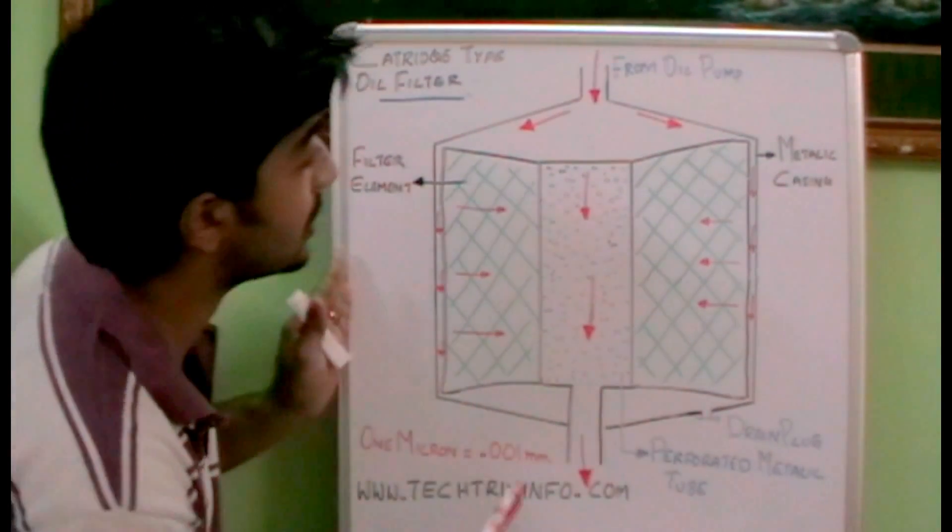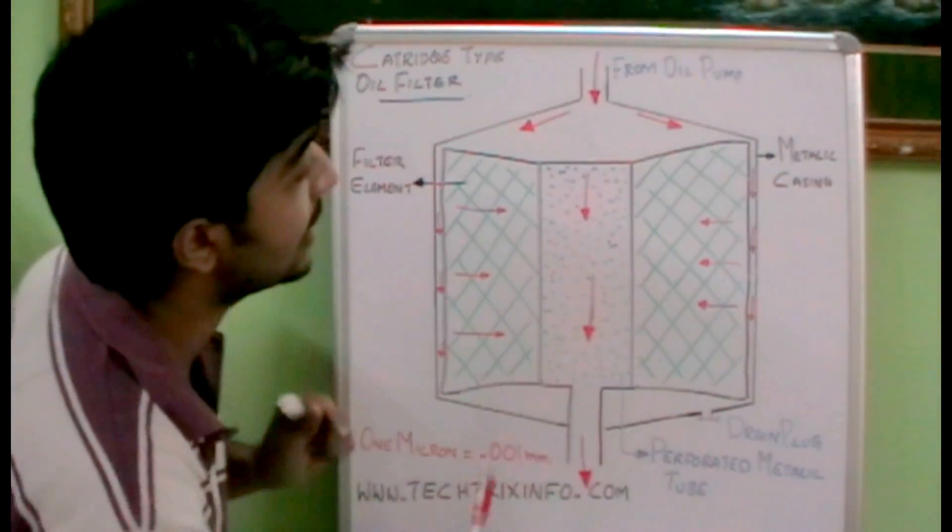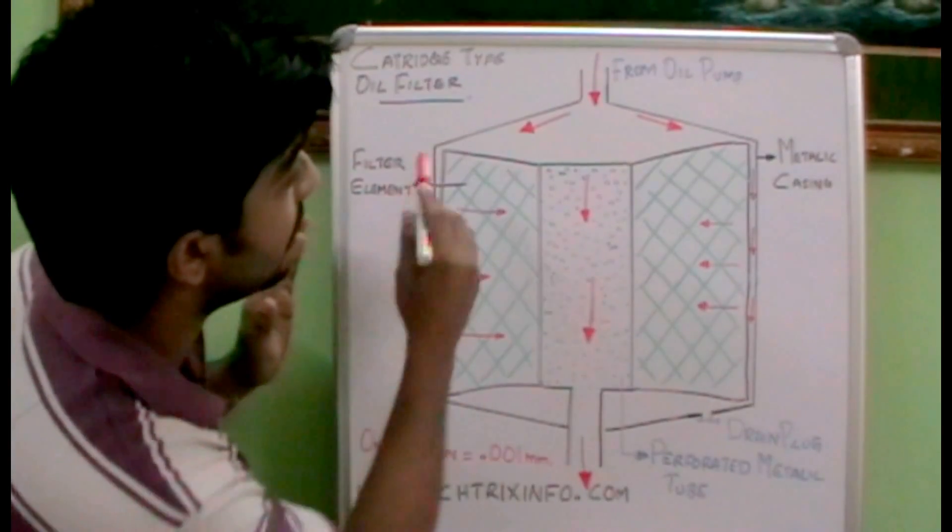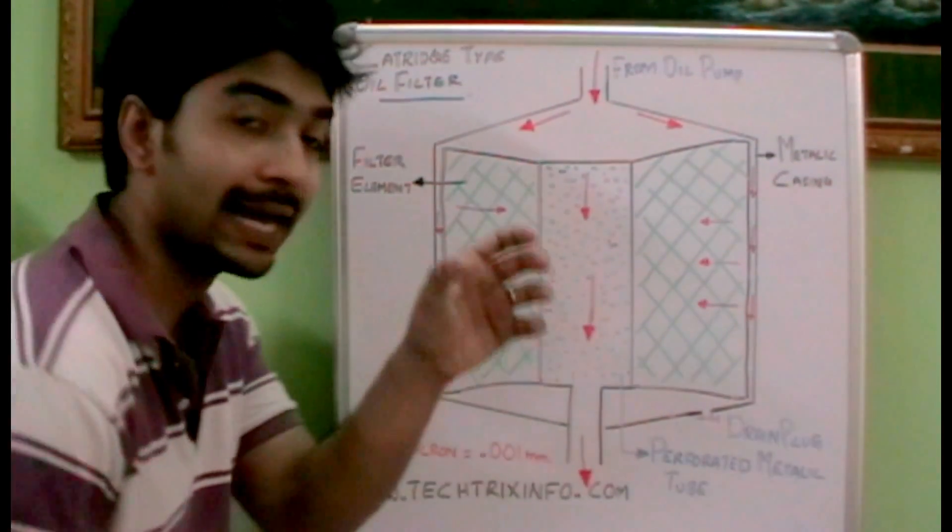So I have drawn a cartridge type oil filter over here. Let's see the main components: the metallic casing. It will be having a metallic casing, it will be like a cylinder if we look from outside.